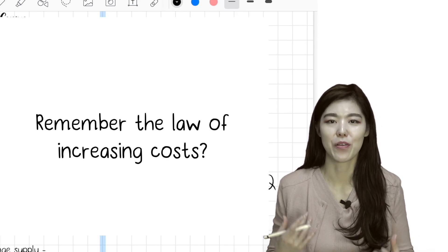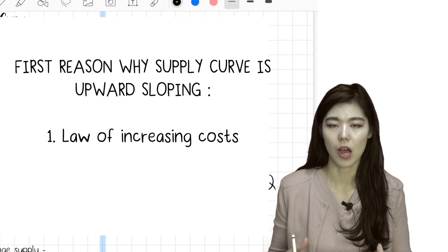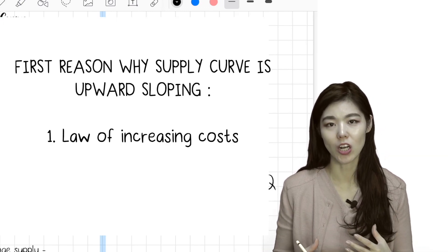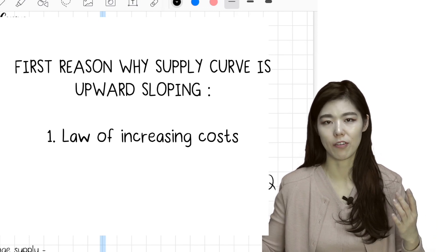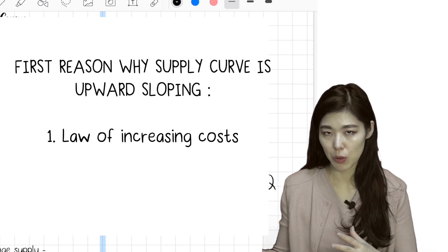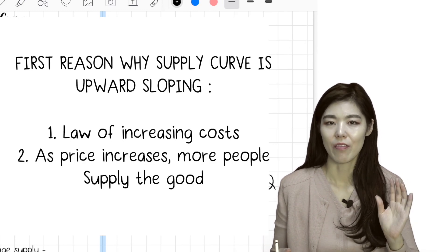So for here as well, when you want to supply more, that would mean that the cost will increase as well. Your efforts and your costs will increase as you produce more of this good. That's why supply is upward sloping. That's one reason why supply is upward sloping.